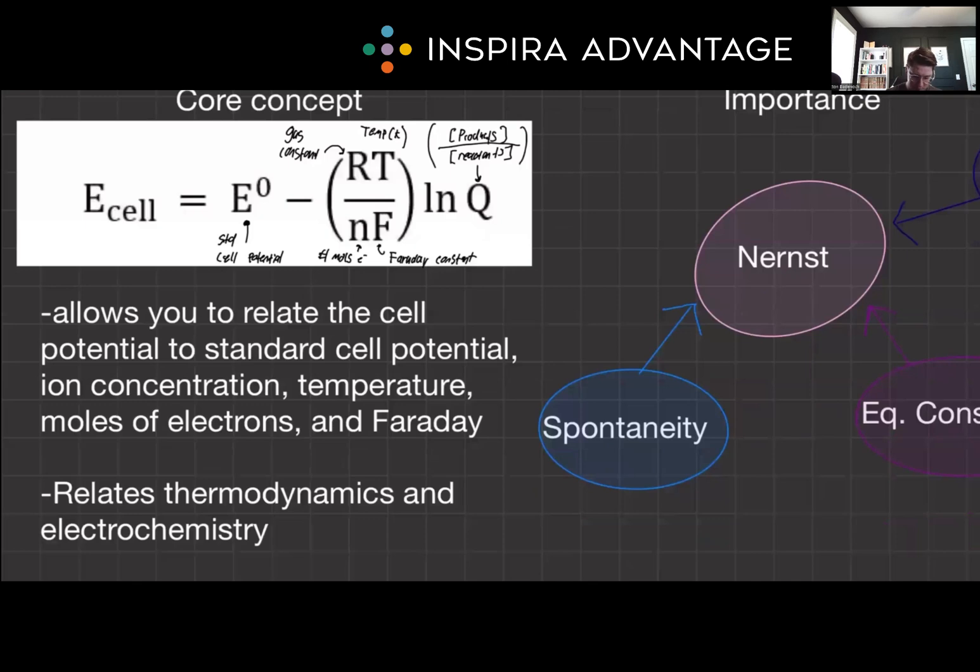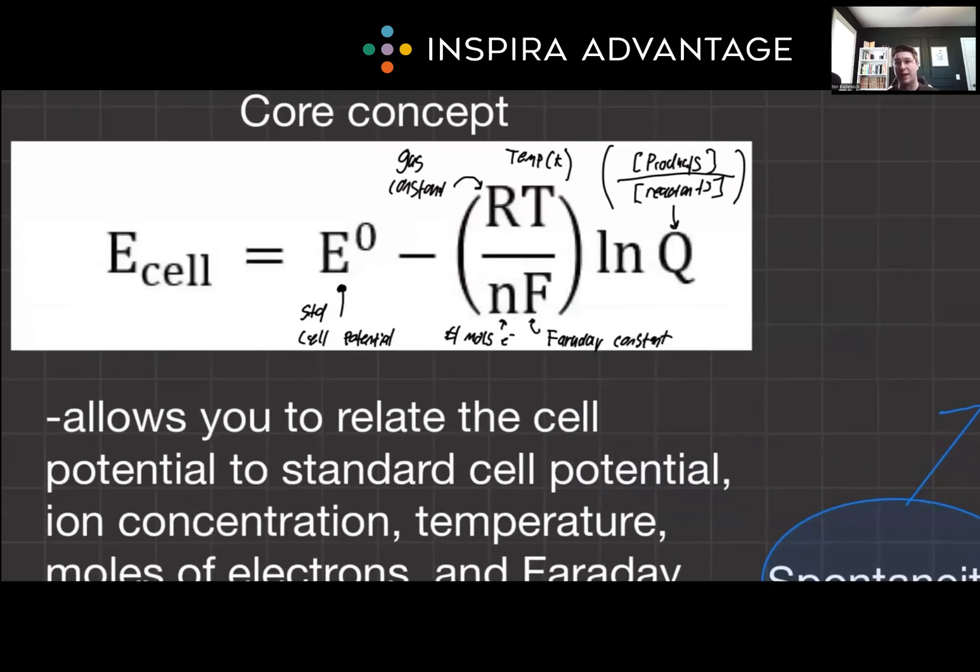Let's start with some core concepts here, which is going to be mathematically heavy. The Nernst equation, this whole thing here, enables us to relate the cell potential under any condition to the standard cell potential, ion concentrations, temperature in Kelvin, the number of moles of electrons being transferred, Faraday's constant, and R is just a gas constant, so it's not really going to vary.